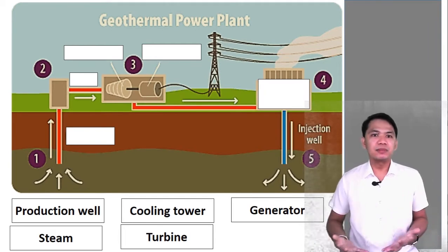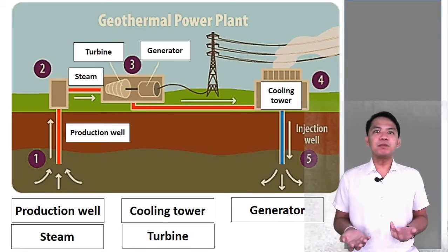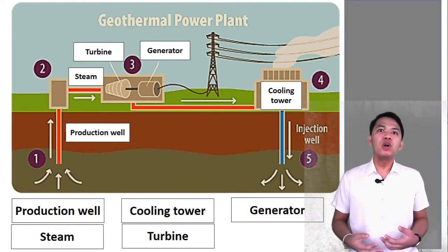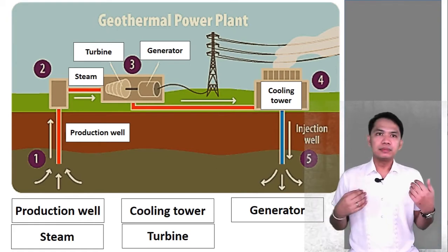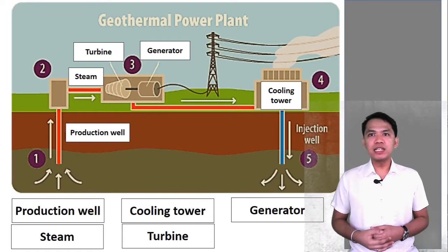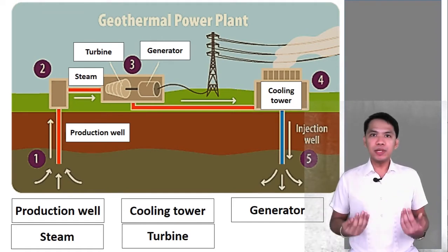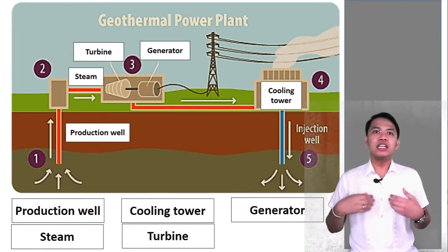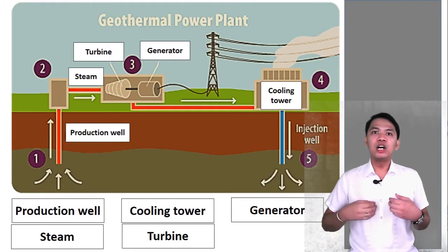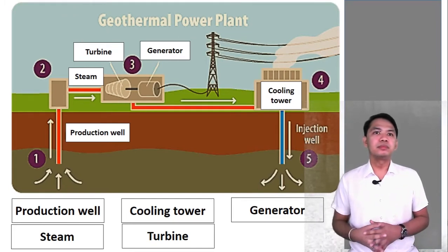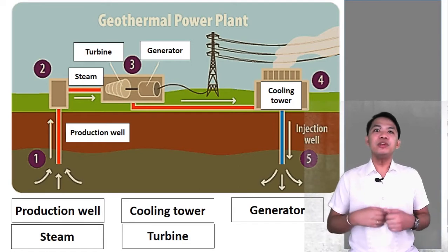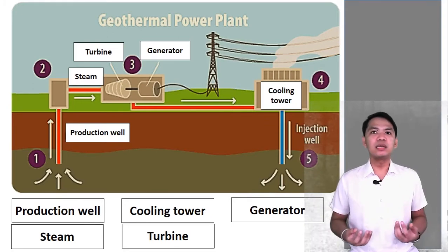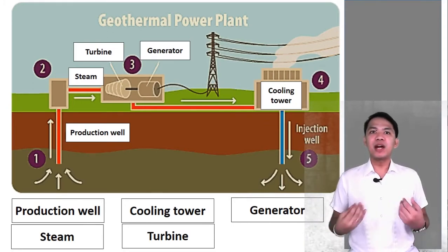Time's up. Let's now take a look at the answers. These are the basic parts of the power plant. This part is the production well, where groundwater enters through the pipe. Steam will be produced and makes the turbines turn, so the generator will operate to produce electricity. The steam goes to a condenser so that it will return into a liquid state and be cooled down on this cooling tower. When cooled, it will return to the underground or geothermal reservoir through the injection well. Mixed to the groundwater there and the process will be repeated.